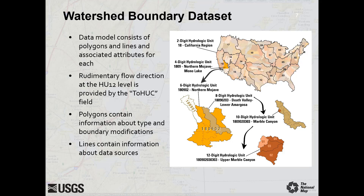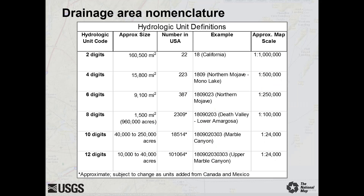The line dataset holds information about the sources used to delineate the hydrologic unit, such as 1:24,000 scale topographic maps or 3DEP elevation data. WBD units are referred to by their hydrologic unit code, such as an 8-digit HU, as highlighted here. Note that most hydrologic units, though not all, also have a common name — such as Death Valley for this example — in addition to its numeric code.